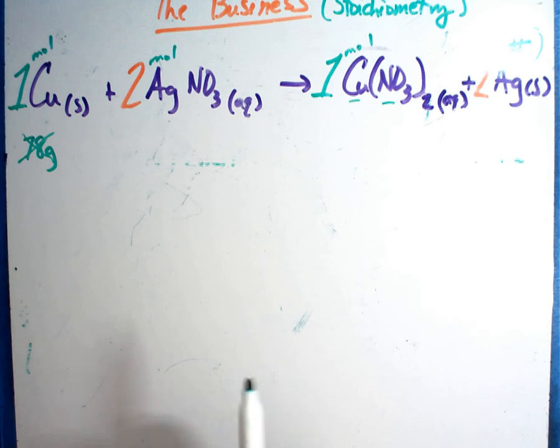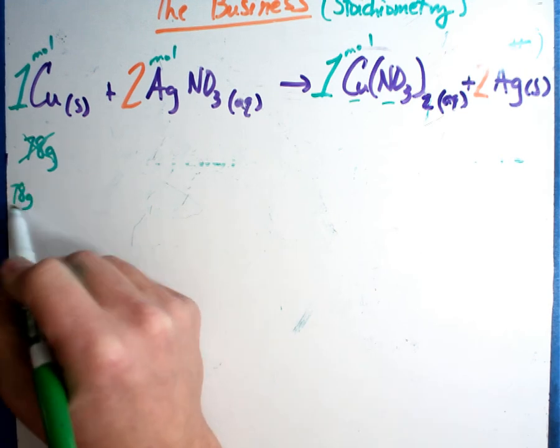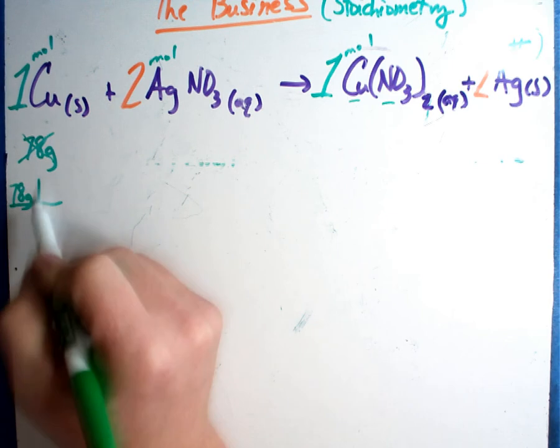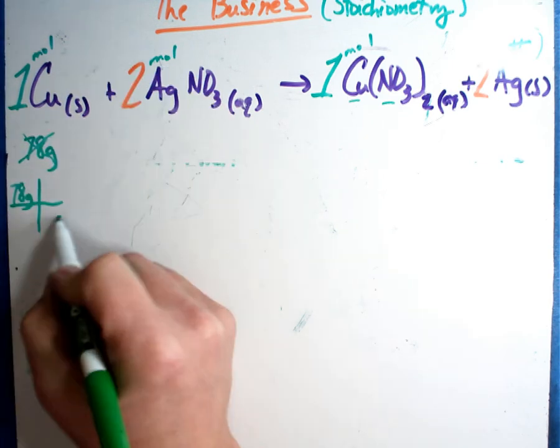I can only work the problem in moles, so change it to moles. Now you'll notice I'm doing the math right under it. I said a while ago we're going to keep columns, so I know where all my numbers go. Grams to moles.